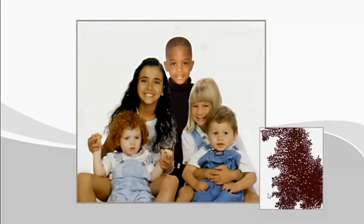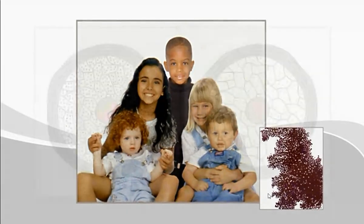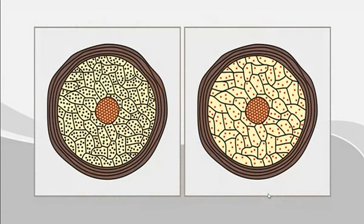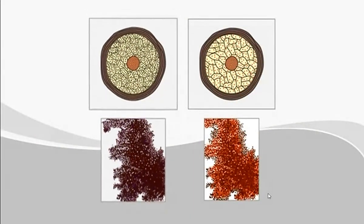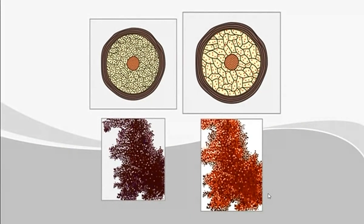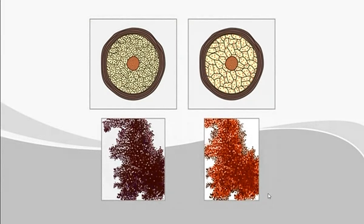Natural hair color is determined through genetic coding. Like eye and skin color, it is the color with which you were born. Melanin is found in the cortex of the hair. There are two types: eumelanin, or black pigment, and pheomelanin, or red pigment.